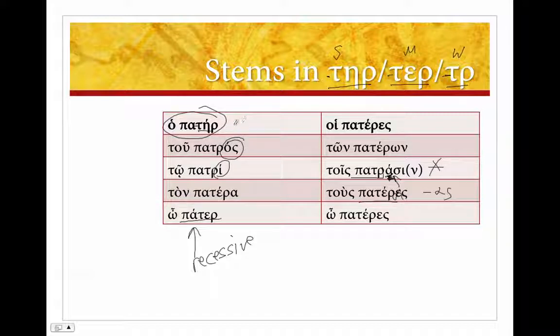So the thing to keep in mind is we've got the strong, only found in the nominative singular. We get the weak, found in the genitive and dative singular. We get the middle, found in the accusative singular, nominative plural, genitive plural, and accusative plural. And then in the dative plural, we're going to have to insert an alpha between the weak stem and the ending. And this will work with meter: metros, metri, metera, meteres, meteron, metrasi, meteres. Or thugater, daughter. All of those ter-type nouns: aster, star, and so on.